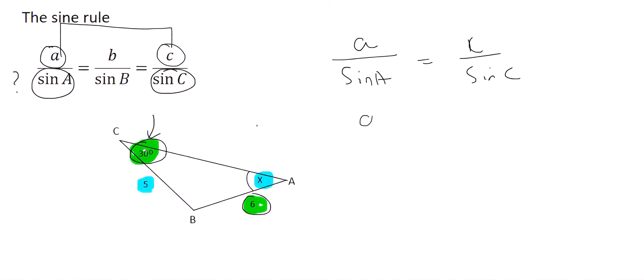So we can say a over sin A is equal to c over sin C. Then you just go fill in whatever you can. So A we don't know. Oh no, A we do know. A is 5. Then we can just say sin of X equals to the length of C. Well, that's 6. And the angle there is 30. So that's going to be the sin of 30.